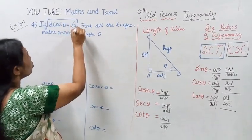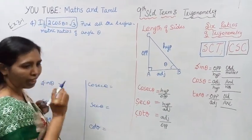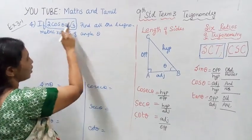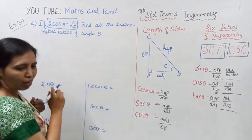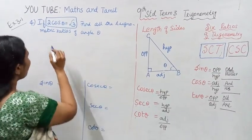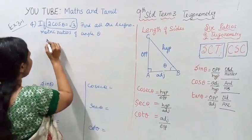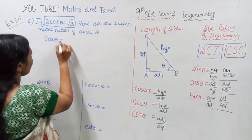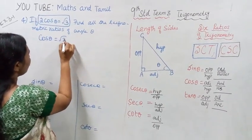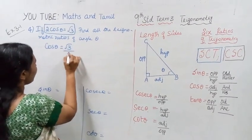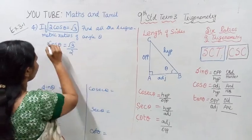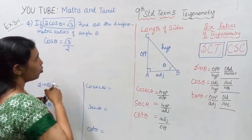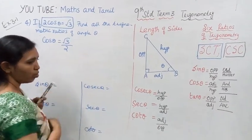2 cos theta equal to root 3. So cos theta equal to root 3 by 2.